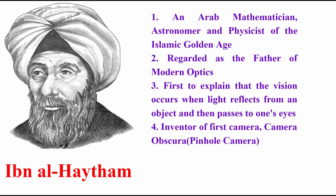He was an Arab mathematician, astronomer, and physicist, and is regarded as the father of modern optics due to his major contributions in visual perception. He was also the first ever man to explain that vision occurs when light reflects from an object and then passes to one's eyes. It was a blind belief among the masses of his period that we can see objects due to our eyes, not because of the rays hitting the object and entering your eyes. He removed these blind beliefs and made people acquainted with the fact of why they can see.